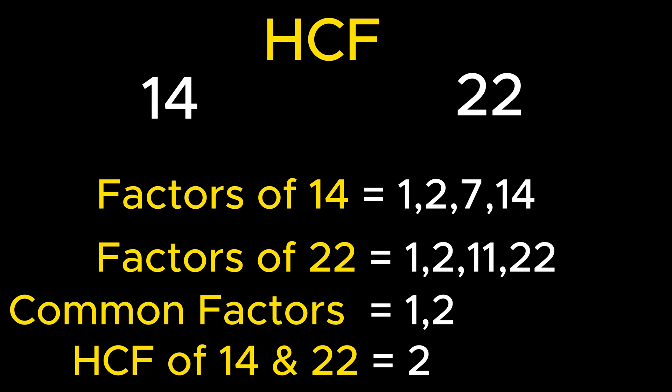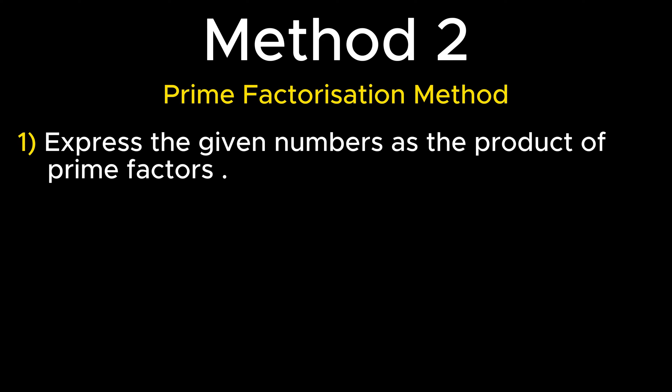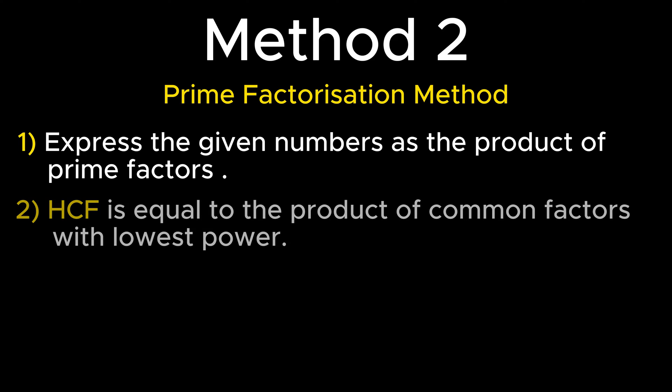Though this method is easy, it is not suitable for large numbers, that is, numbers with more than two digits. To find the HCF for numbers with more than two digits, the prime factorization method is applied. As per this method, the given numbers are expressed as the product of prime factors, and afterwards HCF equals the product of common factors with lowest powers.